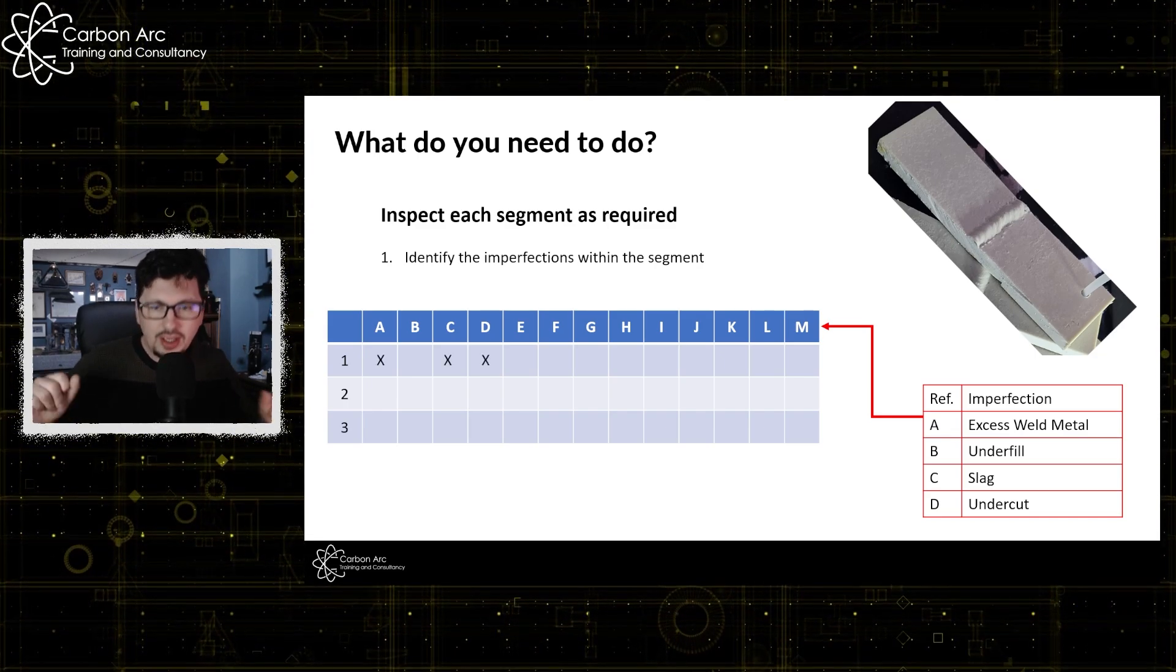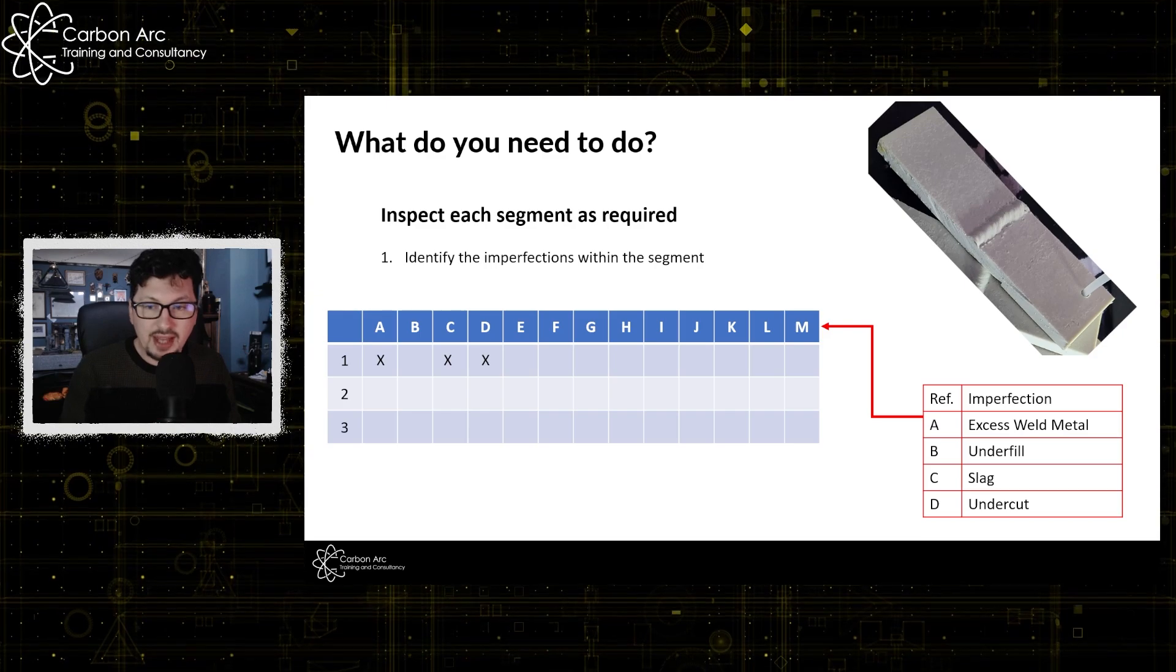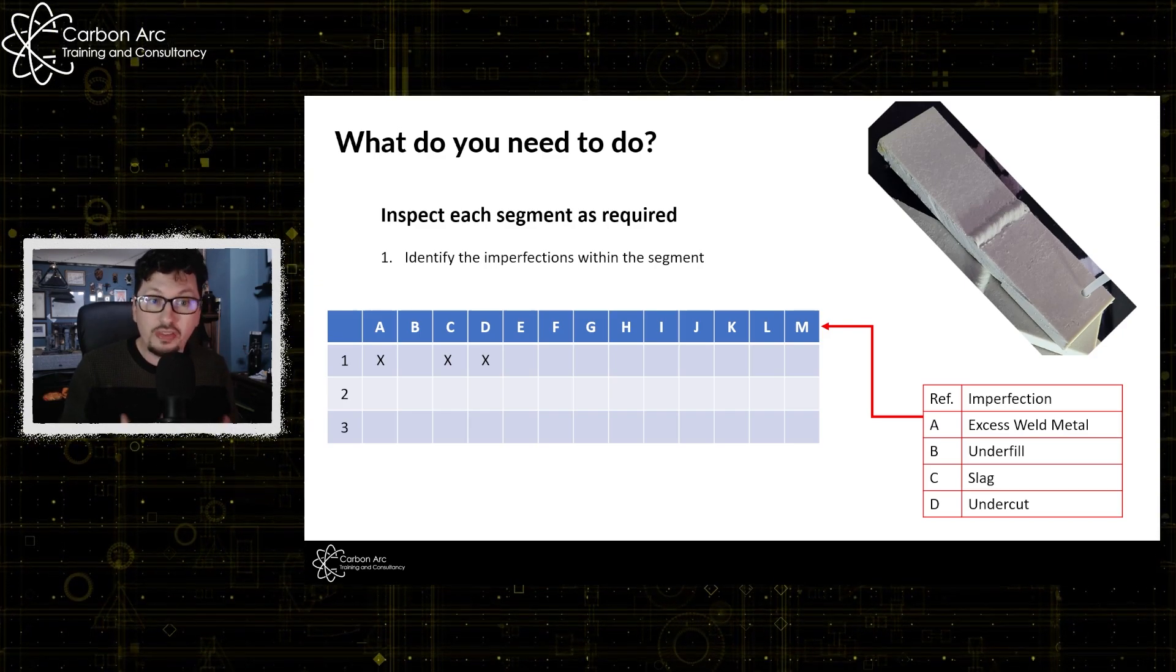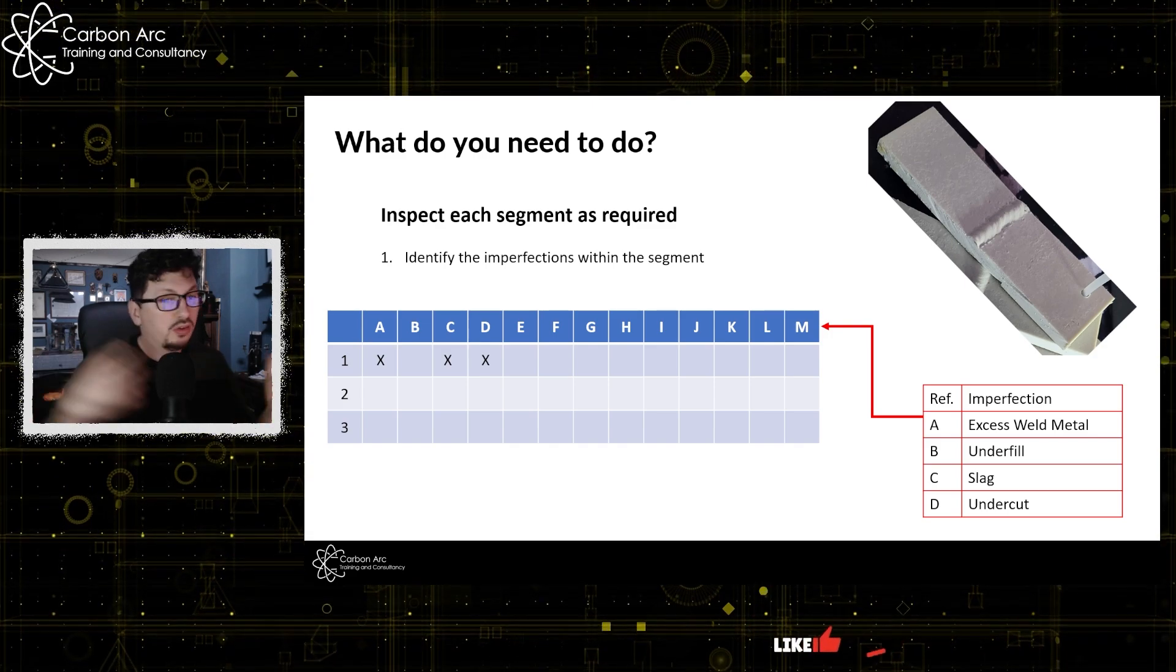So I will say, look, I have some excess weld metal, put it across the box. I have some slag, and I have some undercut on that individual sample. You might have more. You might have less. But what we have to do here is be accurate.